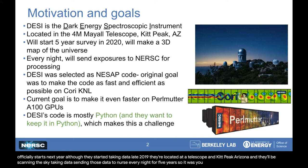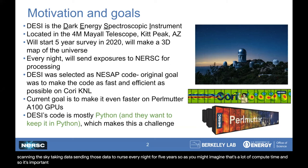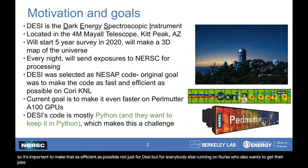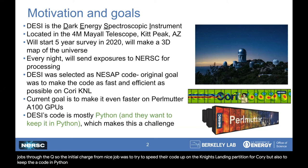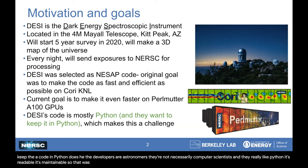As you might imagine, that's a lot of compute time, and so it's important to make that as efficient as possible — not just for DESI, but for everybody else running on NERSC who also wants to get their jobs through the queue. The initial charge from NESAP was to try to speed their code up on the Knightslanding partition for Cori, but also to keep their code in Python. DESI's developers are astronomers — they're not necessarily computer scientists — and they really like Python. It's readable, it's maintainable. So that was their ask to us.